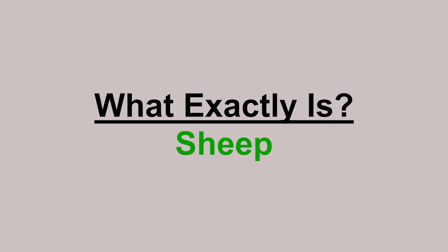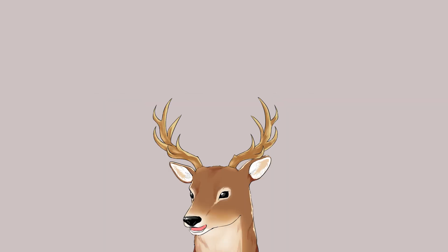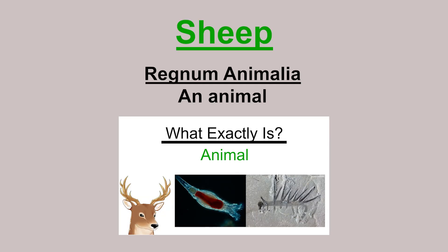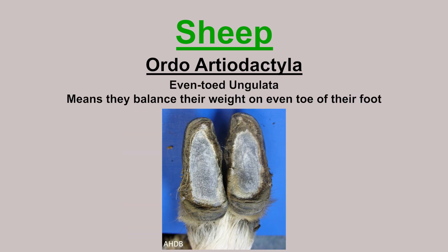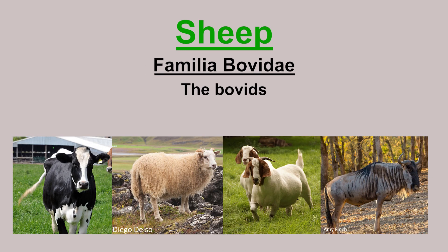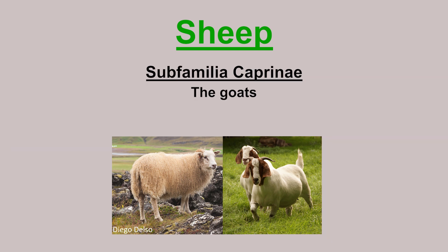What exactly is a sheep? Let's talk about the basics. Sheep is an animal, of course. It is a mammal. It's an even-toed ungulate in the family of cows and goats — more specifically, the goats. That's why it's the goat!